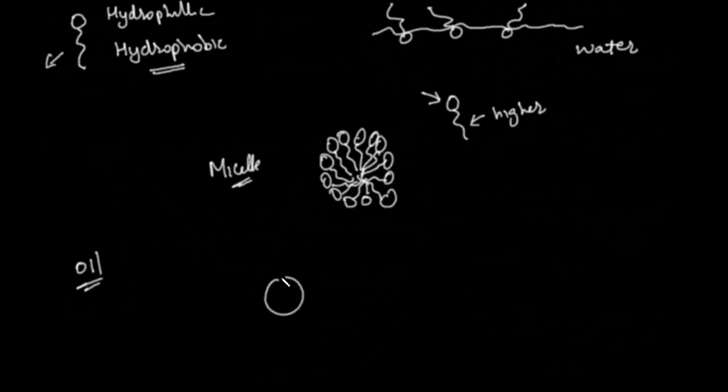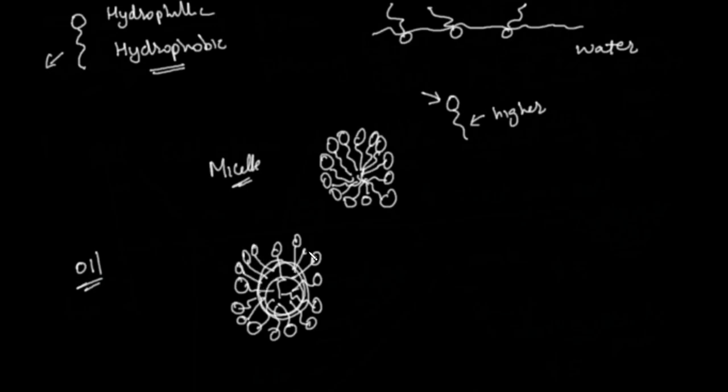If we have oil, the acyl chain will go into this oil like this and it will get clustered around it. So this will be a win-win situation for both the acyl chain and the oil, because the oil also does not like water. So the oil will get into the center and it will be surrounded or completely covered by the micelles. Now here the acyl chain also achieves the lower energy state and the oil also achieves the lower energy state.